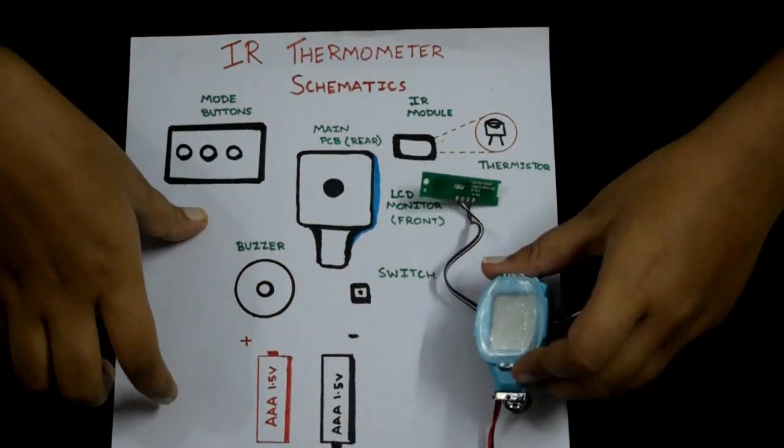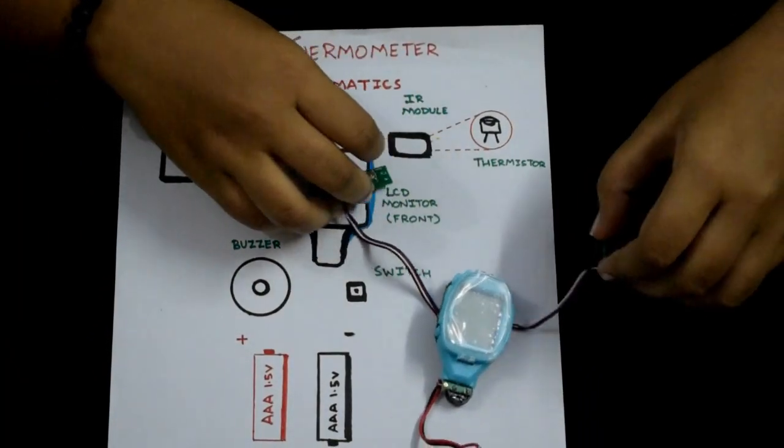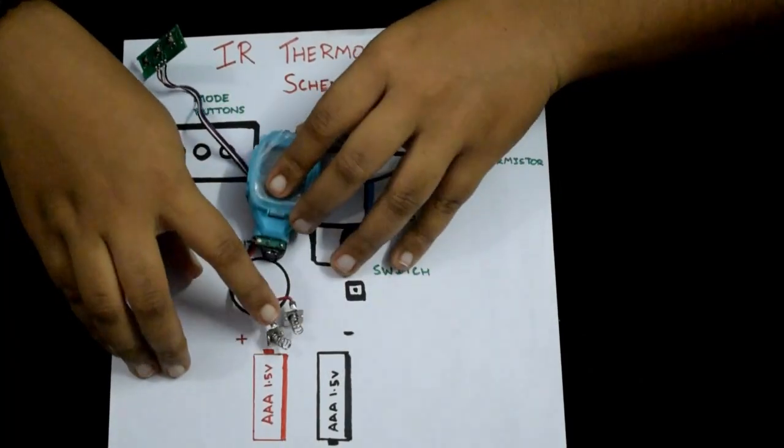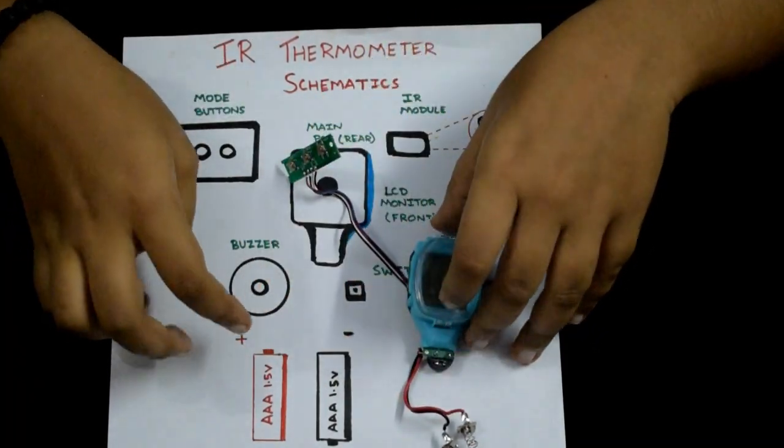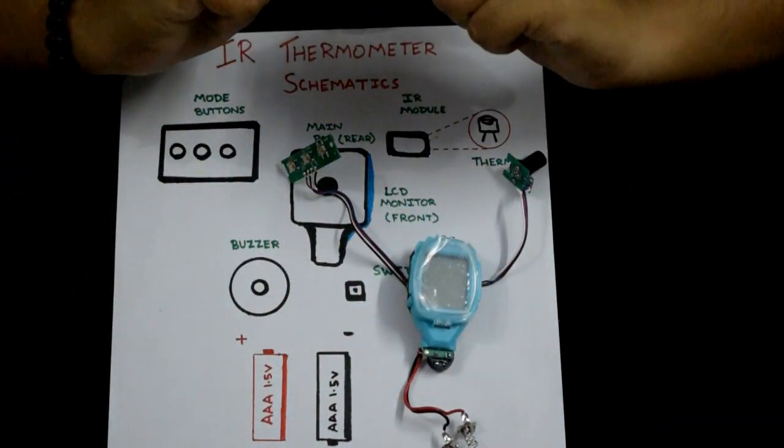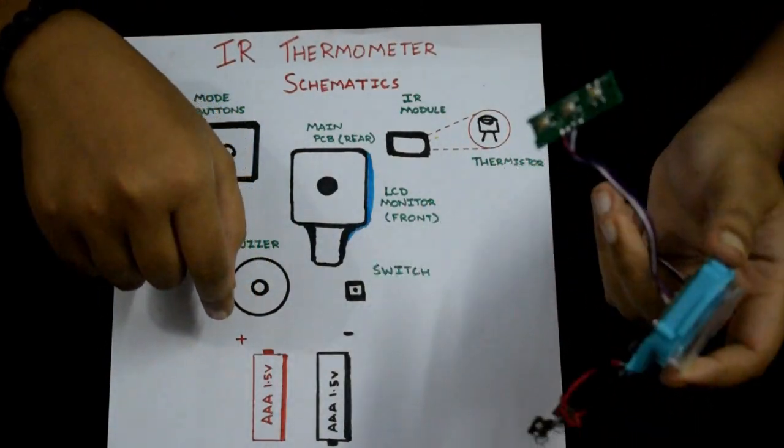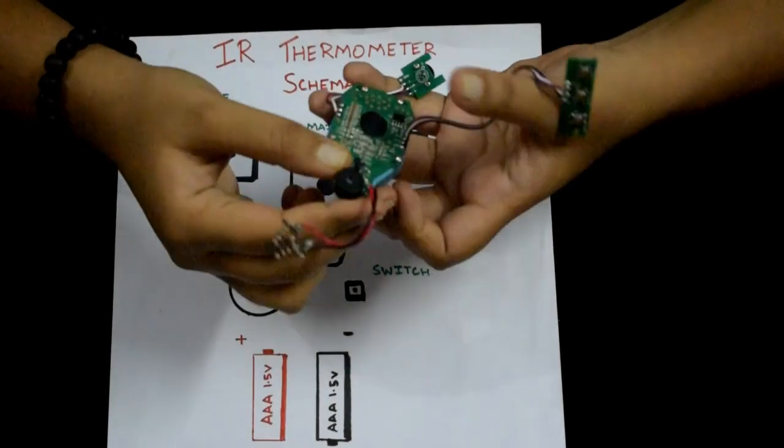I've drawn a schematic here which exactly shows you what's in here. There are these two wires being connected to a battery—two triple A batteries, 1.5 volt each, power the IR thermometer, which means a 3 volt power supply. And when I turn it around, here's a buzzer.